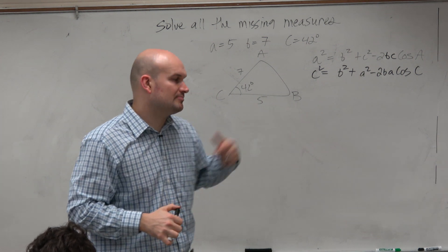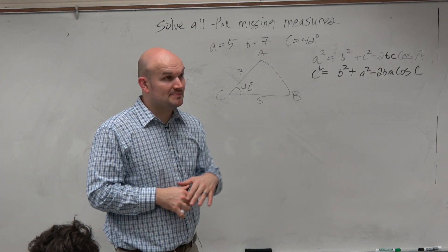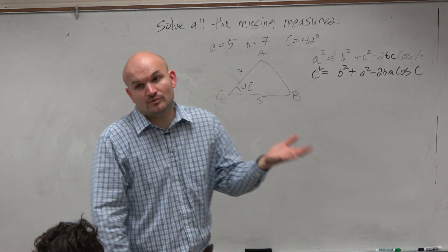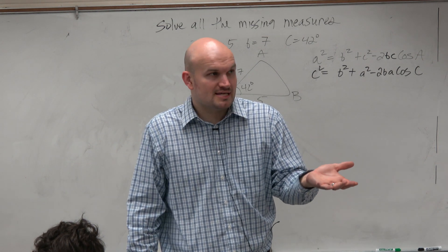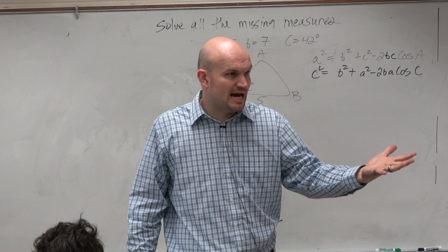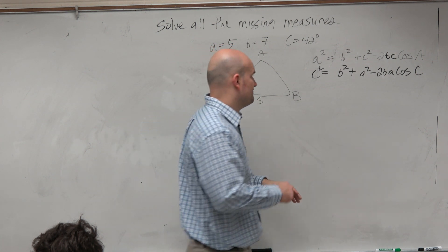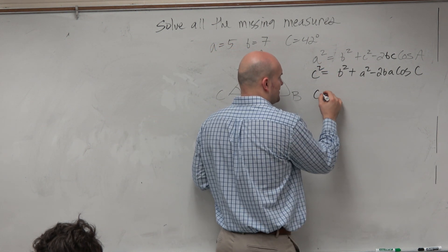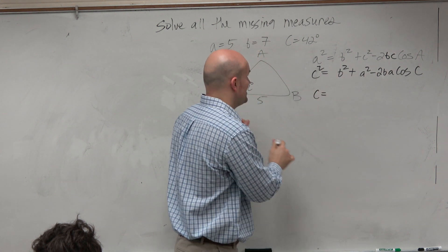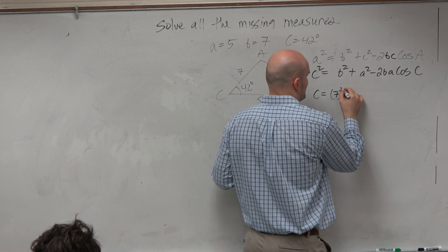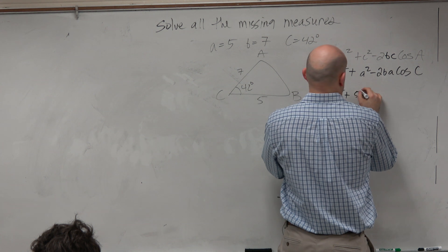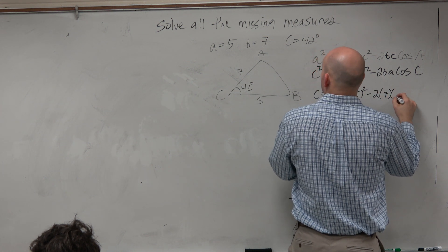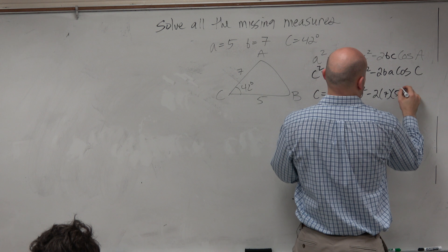So now I can go ahead and plug this in and solve. In this case we only have one option, so let's just find c. To get full credit, plug in your information. So we do: 7 squared plus 5 squared minus 2 times 5 — and that gives us c squared.